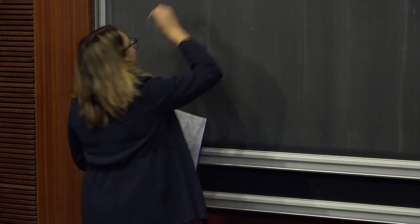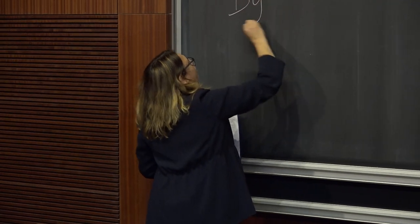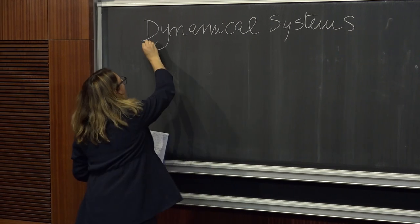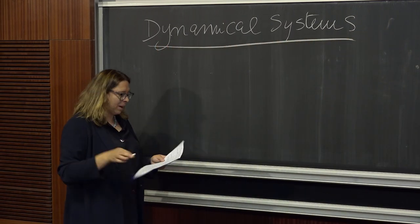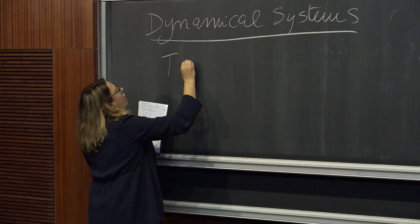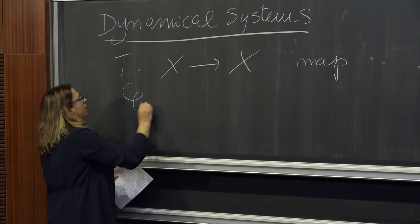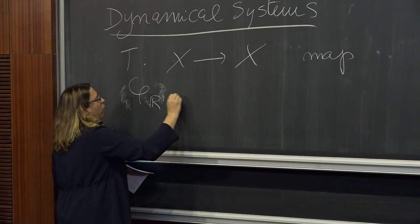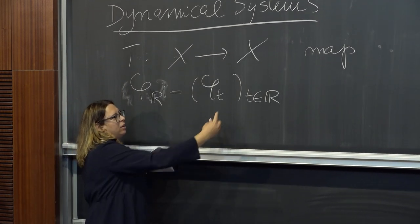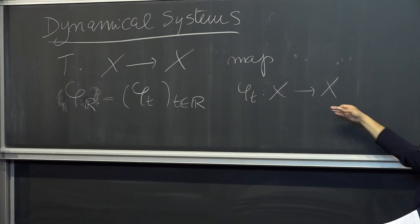Not everybody in this room works on dynamical systems, so let me start from basics. A dynamical system could be iteration of a map, or could be iteration of a one-parameter family of maps — a flow. Let me write phi_t for the collection of phi_t family parameterized by t, which you should think of as time, and X as the phase space. This is a discrete dynamical system, and this is a continuous time dynamical system.